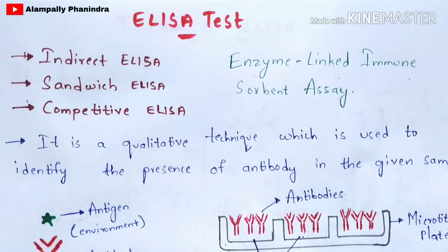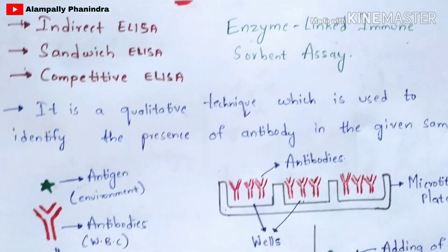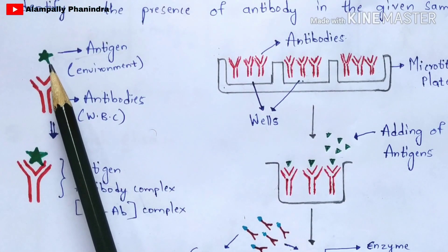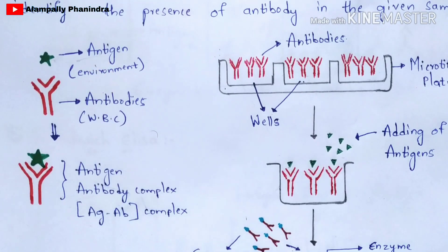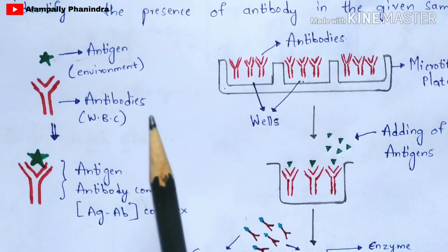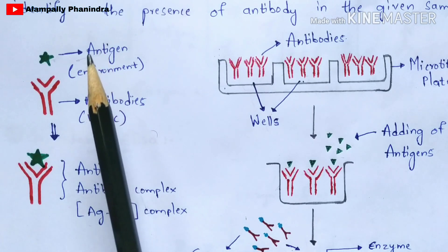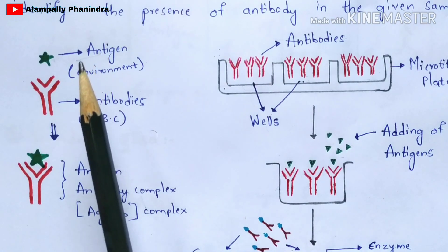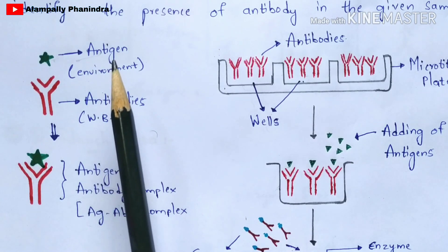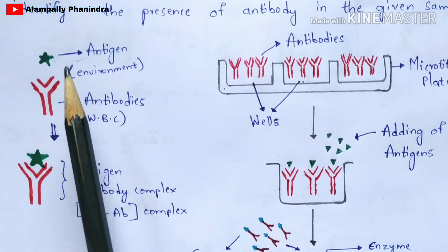Before knowing the protocol of this ELISA test, you have to know a basic idea about antigen-antibody interaction. The green star-like structures I have drawn here are called antigens. Antigens are foreign particles — either bacteria or viruses — which are very harmful to our body. These antigens present in the external environment will enter into our body.